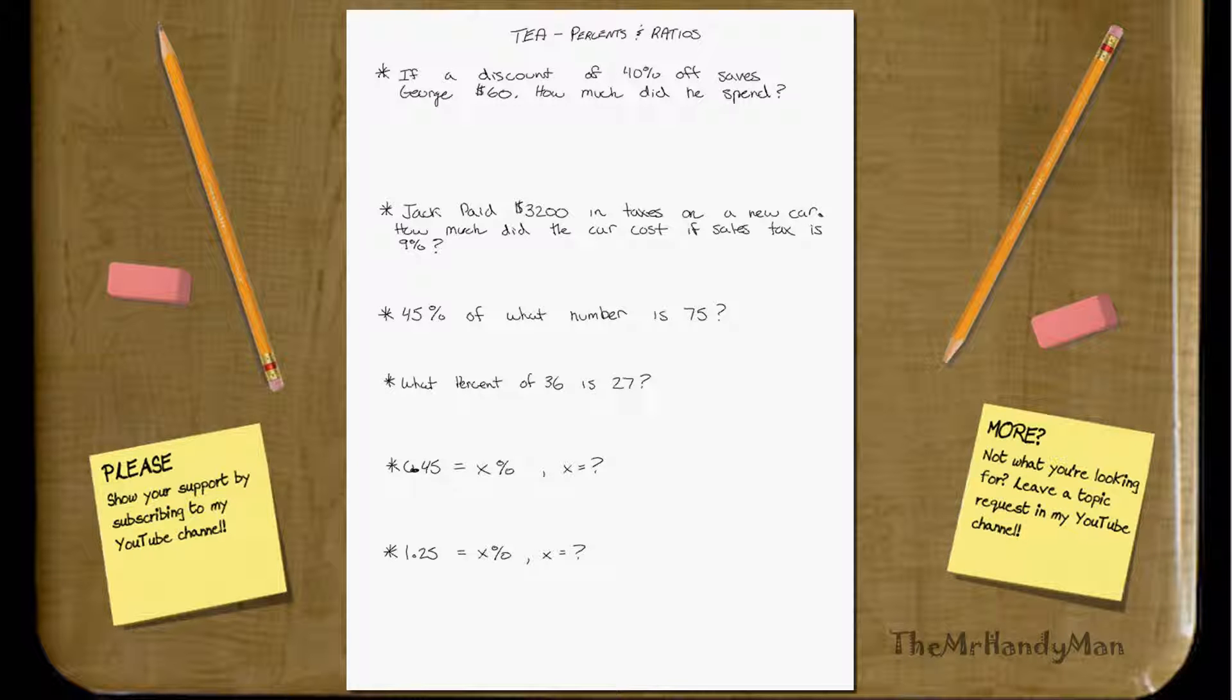This is percents and ratios, and I've set up here six little problems that I can go through with you. First one, if a discount of 40% saves George $60, how much did he spend?